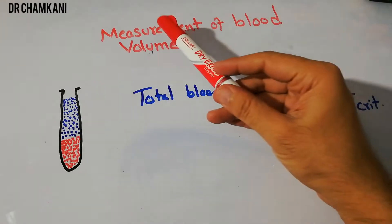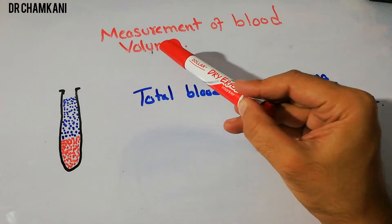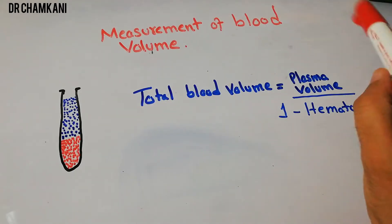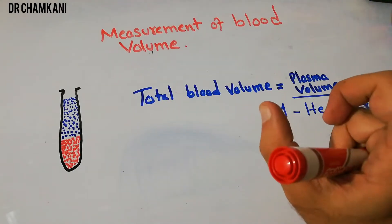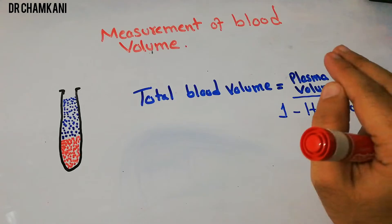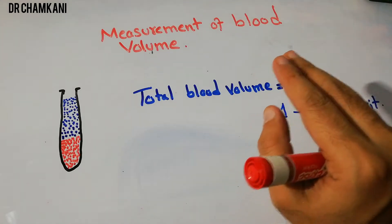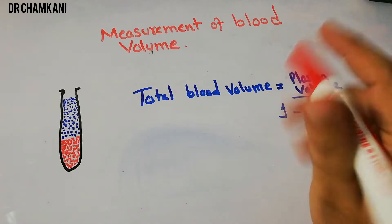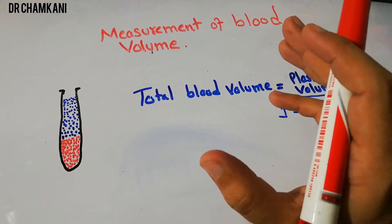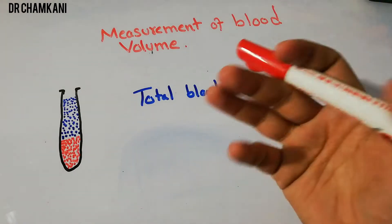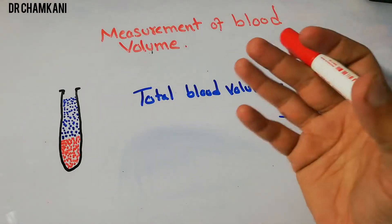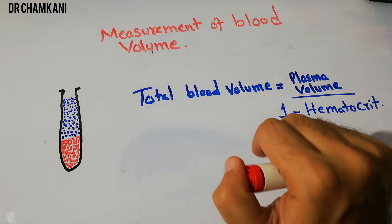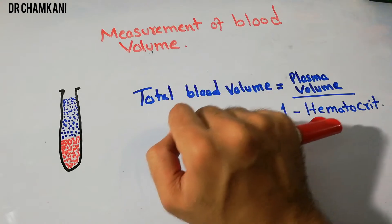In this lecture we are going to discuss the measurement of blood volume. So far we have discussed the measurement of extracellular fluid, intracellular fluid, plasma, and interstitial fluid. We have discussed in detail in previous lectures the indicator dilution method through which we measure the different fluid compartments in the body. That equation is going to be helpful in the measurement of blood volume as well.